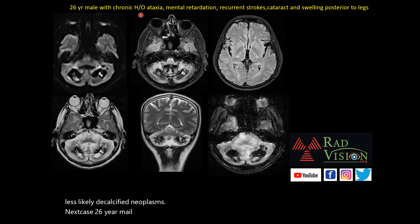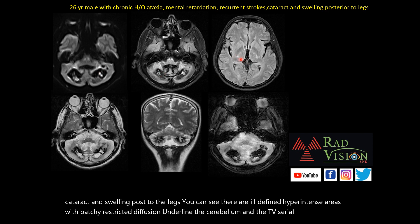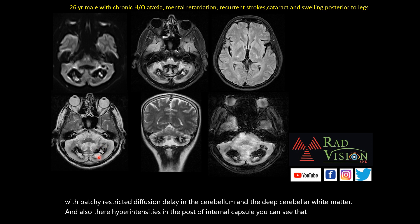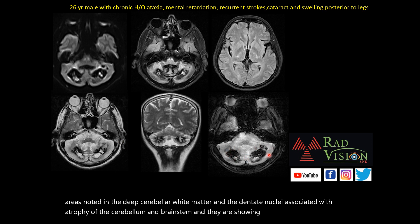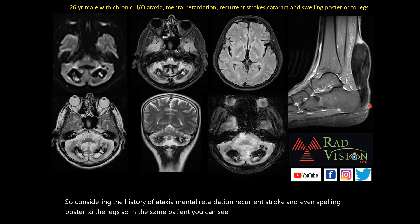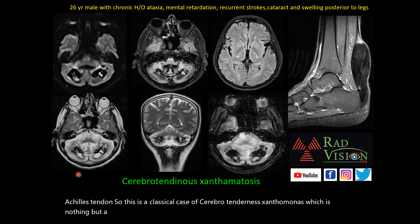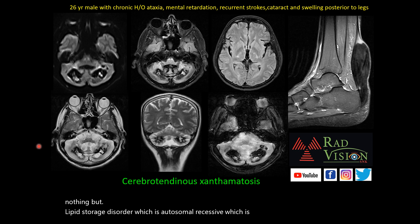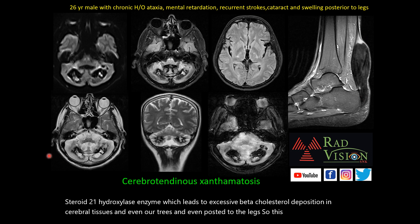Next case: a 26-year male with chronic ataxia, mental retardation, recurrent strokes, cataract, and swelling posterior to the legs. There are ill-defined hypointense areas with patchy restricted diffusion on DWI in the cerebellum and deep cerebellar white matter, hyperintensities in the posterior limb of the internal capsule, cystic areas in the deep cerebellar white matter and dentate nuclei with cerebellar and brainstem atrophy, and a fat-containing lesion in the Achilles tendon. This is cerebrotendinous xanthomatosis — an autosomal recessive lipid storage disorder due to deficiency of sterol-27-hydroxylase enzyme, causing excessive cholesterol deposition in cerebral tissues and tendons.